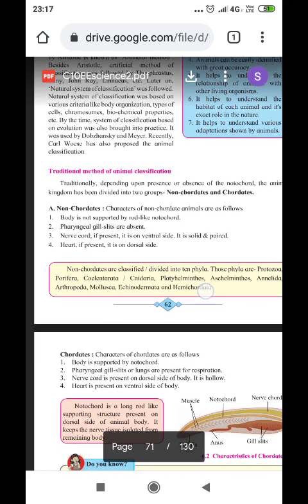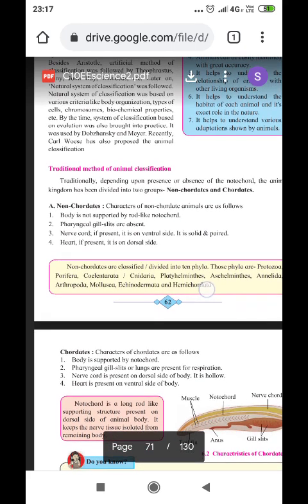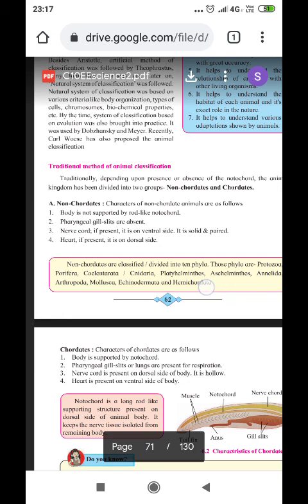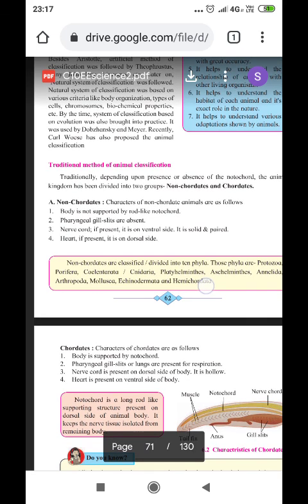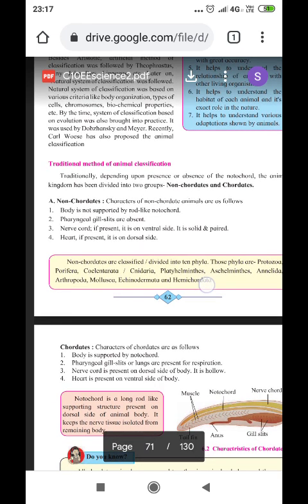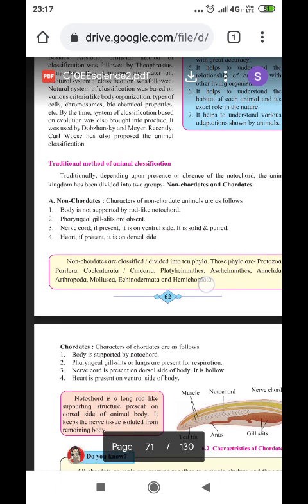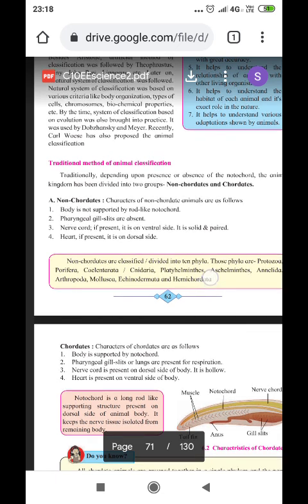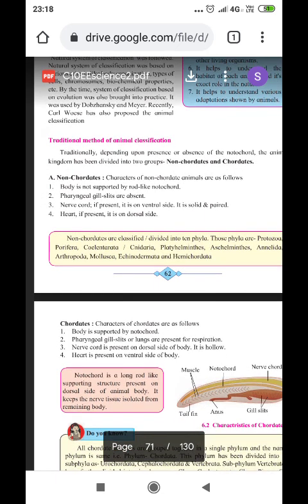Non-chordates means without backbone. Notochord is absent in case of non-chordates. Pharyngeal gill slits are absent, then nerve cord is also present, that is on the ventral side. Ventral means front side, and dorsal means back side. Heart, if it is present, is on the dorsal side. Dorsal side means back side.